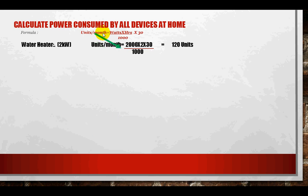Next comes the fridge. A fridge is about 300 watts. So: 300 watts × 8 hours ÷ 1000 × 30 days = 72 units. The reason for taking 8 hours is that the fridge only consumes power when the compressor is on; in all other cases it is off. That is why we have taken 8 hours as the effective usage per day.